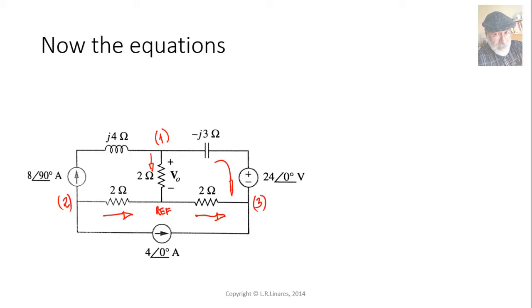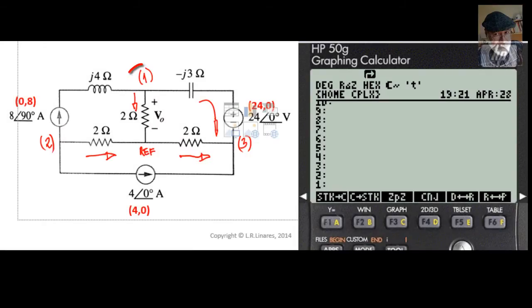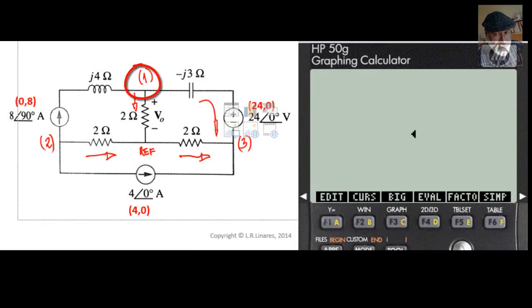Let me bring in the calculator and type 3 KCL equations: one for node 1, one for node 2, and one for node 3. Let's go to the Equation Writer. For KCL at node 1, we have the currents entering node 1: (0, 8). I just write 0, 8 and the calculator adds the parentheses, not me.